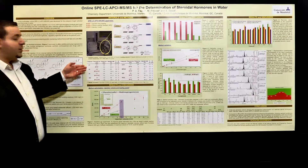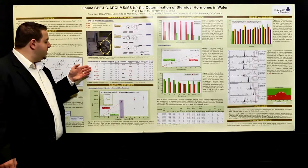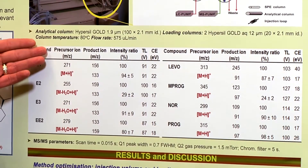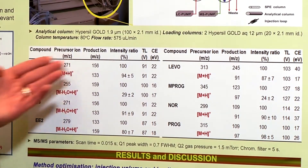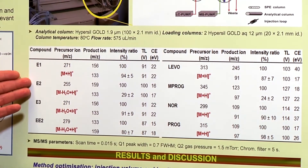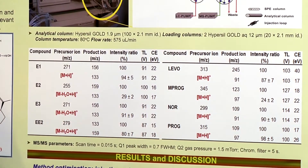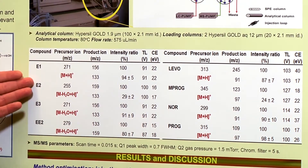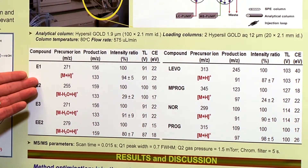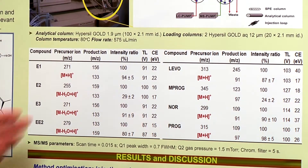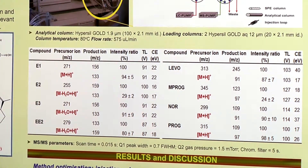Here are the different MS/MS parameters we're using: the precursor ions and product ions. We're working in positive mode APCI. These are the different fragments we use to quantify and confirm the presence of our hormones in this wastewater effluent.